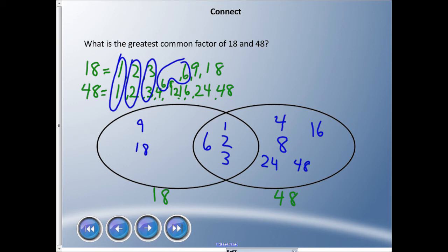So I can put 4 is for 48, and 8 is for 48, and 16, 24, and 48. It's got a few numbers on that side, and on this side we had 9 and 18. Now, what is the greatest common factor of 18 and 48? Well, let's look in this middle area here. Which one is the largest? 6. So we can say the GCF, or greatest common factor, of 18 and 48 is 6.